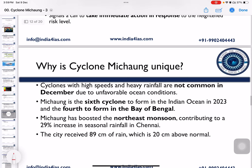Cyclone Michon is unique because it is a high-speed, heavy-rainfall cyclone that formed in the month of December. Usually in December we do not witness cyclones of very high severity, but Cyclone Michon is an exception, attributed to climate change and global warming, which are increasing the frequency and intensity of cyclones in December. It is the sixth cyclone from the Indian Ocean in 2023 and the fourth from the Bay of Bengal region. Cyclone Michon also boosted the northeast monsoon, especially around Chennai and surrounding regions in Tamil Nadu.